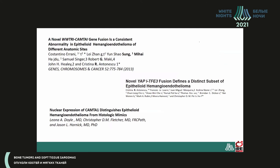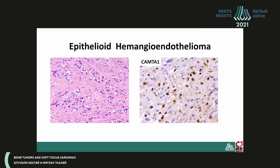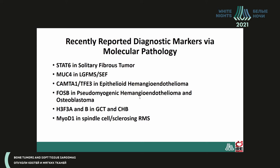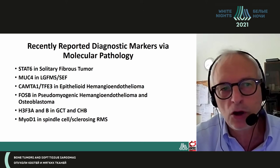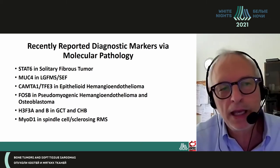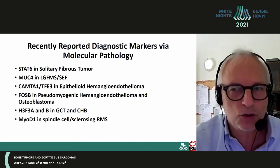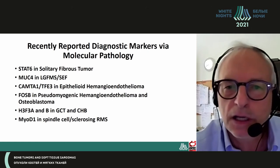Also, gene fusions involving CAMTA1 and TFE3 in epithelioid hemangioendothelioma: CAMTA1 is expressed in more than 80% of epithelioid hemangioendothelioma, while TFE3 only in about 30%. Antibodies have been developed for both gene fusions. Recently reported diagnostic markers via molecular biology include STAT6 in solitary fibrous tumor, MUC4 in low-grade fibromyxoid sarcoma and sclerosing epithelioid fibrosarcoma, CAMTA1 and TFE3 in epithelioid hemangioendothelioma, FOSB in pseudomyogenic hemangioendothelioma and osteoblastoma, H3.3A and H3.3B in giant cell tumor of bone and chondroblastoma, and MYOD1 in spindle cell sclerosing rhabdomyosarcoma.